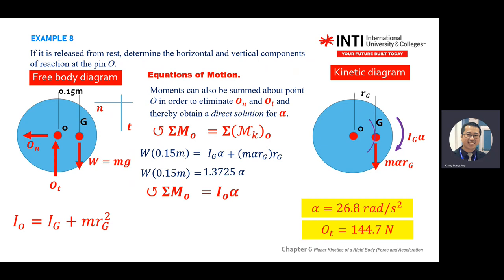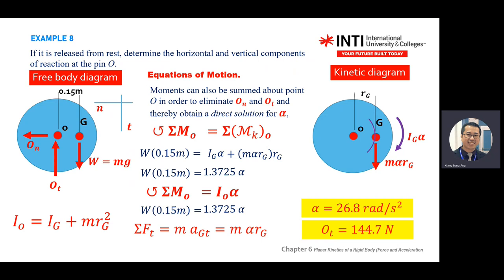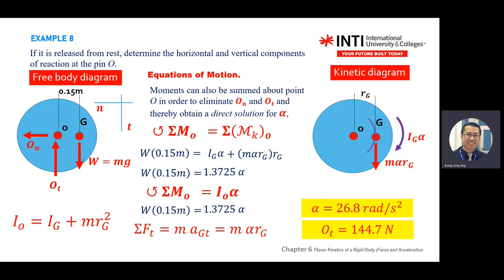Next, you need to find I_O times alpha. How to find I_O? I_O equals I_G plus M times R squared. Previously the equation was I equals I_G plus M times d squared — here we use R. Substitute the values and you get approximately 1.3 something.